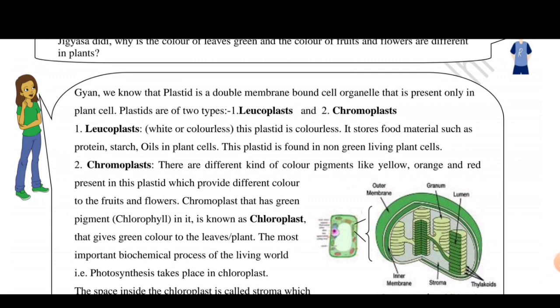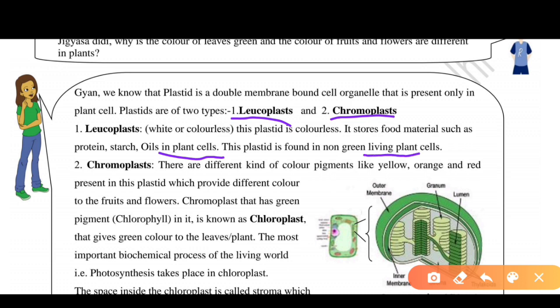We have two types of plastids. Number one is Leucoplast and number two is Chromoplast. Leucoplast is normal and simple — it is colorless and white. It stores food materials like proteins, starch, and oils in plant cells. Leucoplast is found in non-green parts of plants.